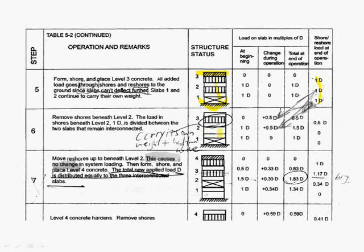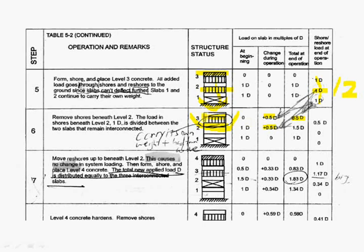Then we take shoring from the second floor. What's going to happen? Now we allow floor 2 and floor 3 to deflect, which means they're going to carry weight. So previously the load on the second floor of shoring is going to be distributed evenly on slab 2 and slab 3 — 1D divided by 2 gives you 0.5D on each. You update that, and as you can see, slab 3 is now going to carry half of its own weight, which is 0.5D. Previously it carries nothing. So the third floor of shoring is going to carry less than before: 1D minus 0.5D, which gives you 0.5D.